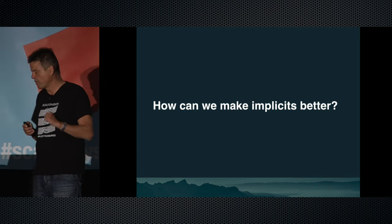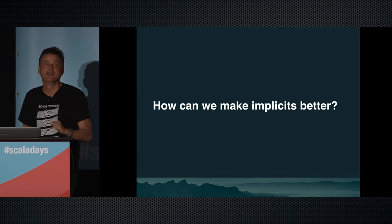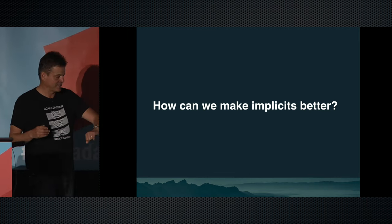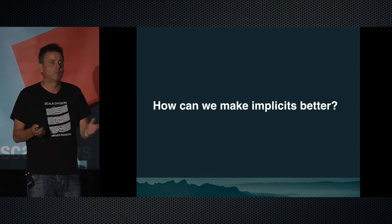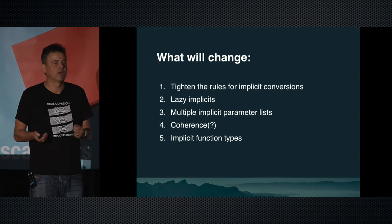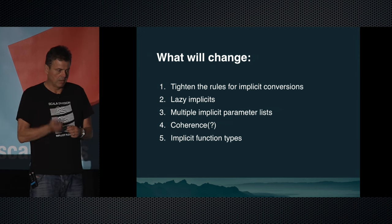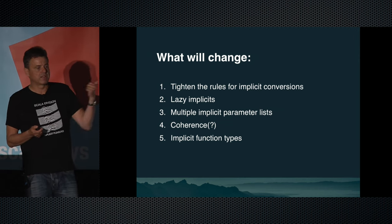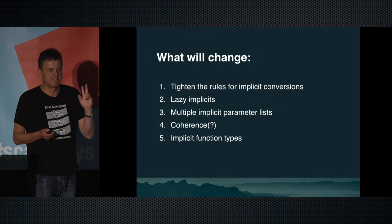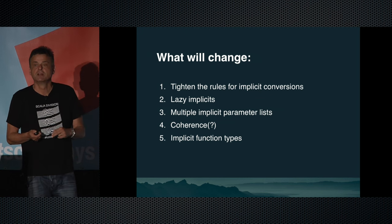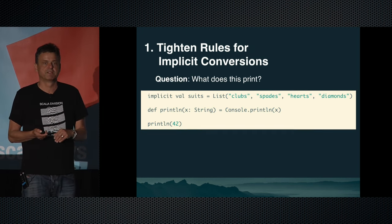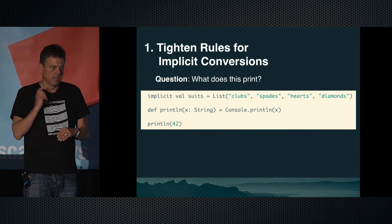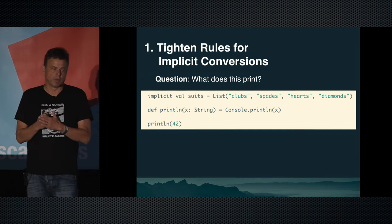Implicits are not perfect yet. I want to take the rest of my talk to tell you how I think we can make them better. There are five things: tighten the rules for implicit conversions, lazy implicits, multiple implicit parameter lists, coherence, and implicit function types.